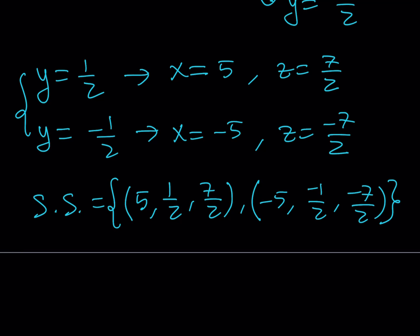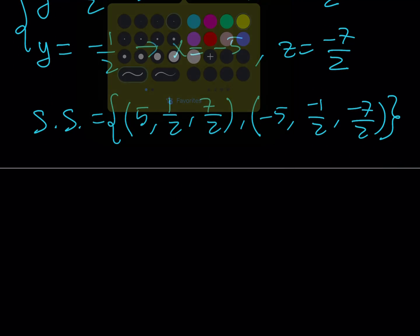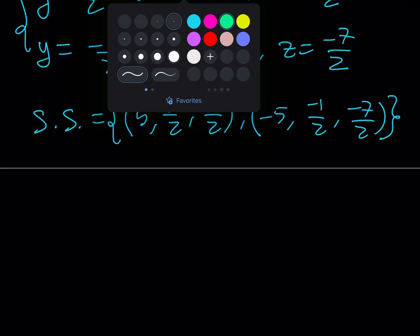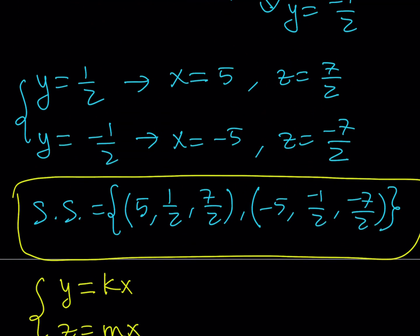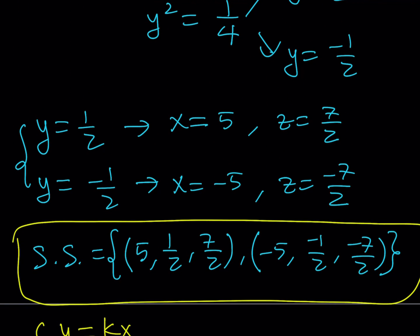Having thought about this, since we're getting a ratio between these variables, another method you could use from the beginning is to let y equals kx and z equals mx, then proceed from there. Since the left-hand sides are homogeneous, plugging those in should also yield a nice result. Well, this brings us to the end of this video — I hope you enjoyed it. Don't forget to like, comment, and subscribe. I'll see you tomorrow with another video. Until then, be safe, take care, and bye-bye.